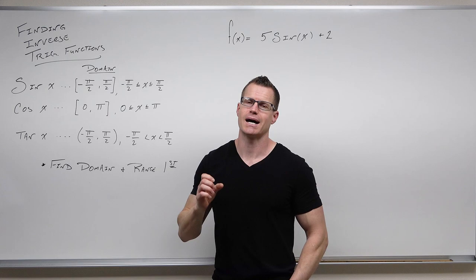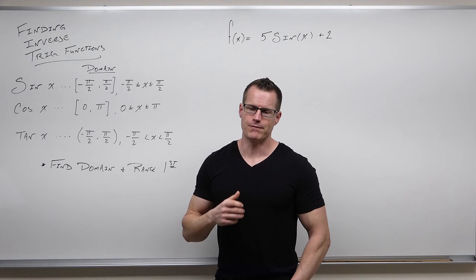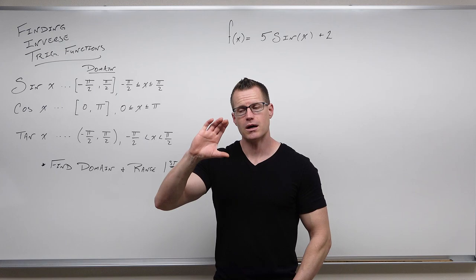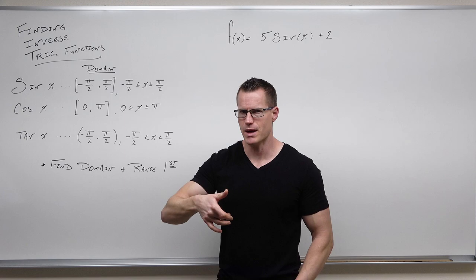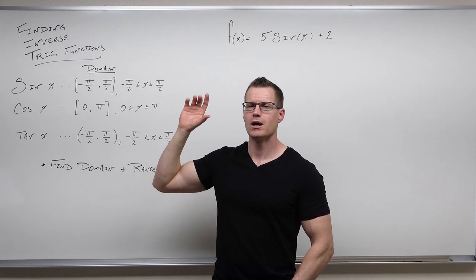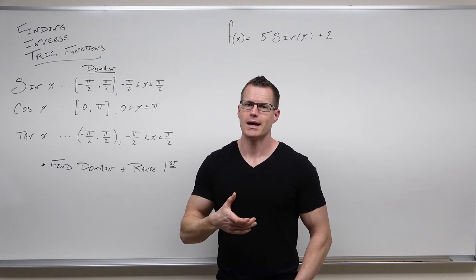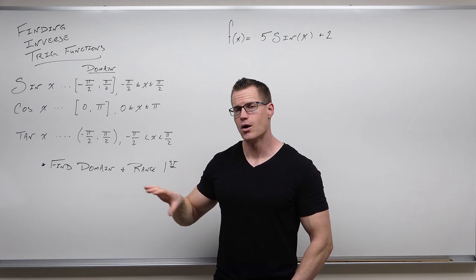We have to make sure that whatever is here falls in whatever is there. Number one, when you find an inverse, the first thing we're going to do is find the domain and the range. Because for an inverse function, inputs and outputs change — domain becomes range and range becomes domain. So if we can find our domain and range of our original function, we automatically have the domain and range of our inverse.